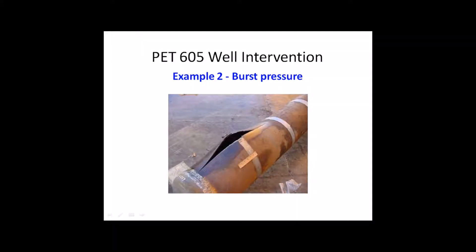Welcome to PET 605 example 2, Burst Pressure. Shown in the picture is a tubular that failed because of high internal pressure. We note that it fails along a line that is parallel to the pipe axis. The pipe has failed because of high tangential stress in tension. The failure line is perpendicular to the tangential stress.